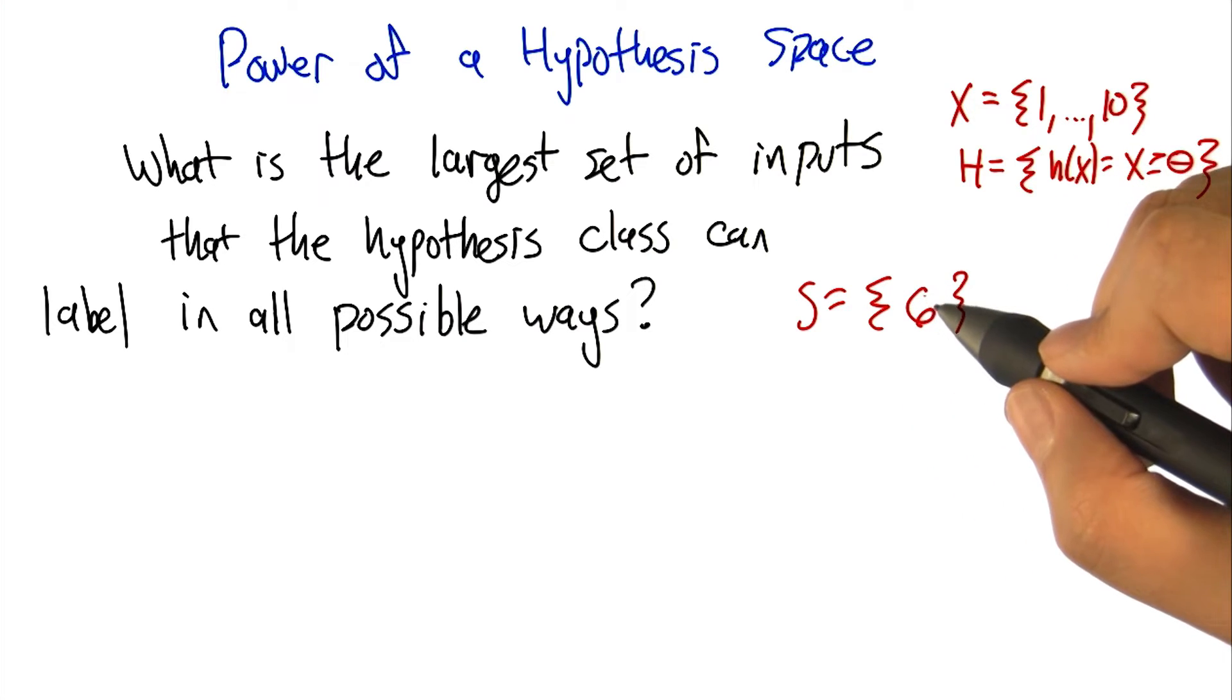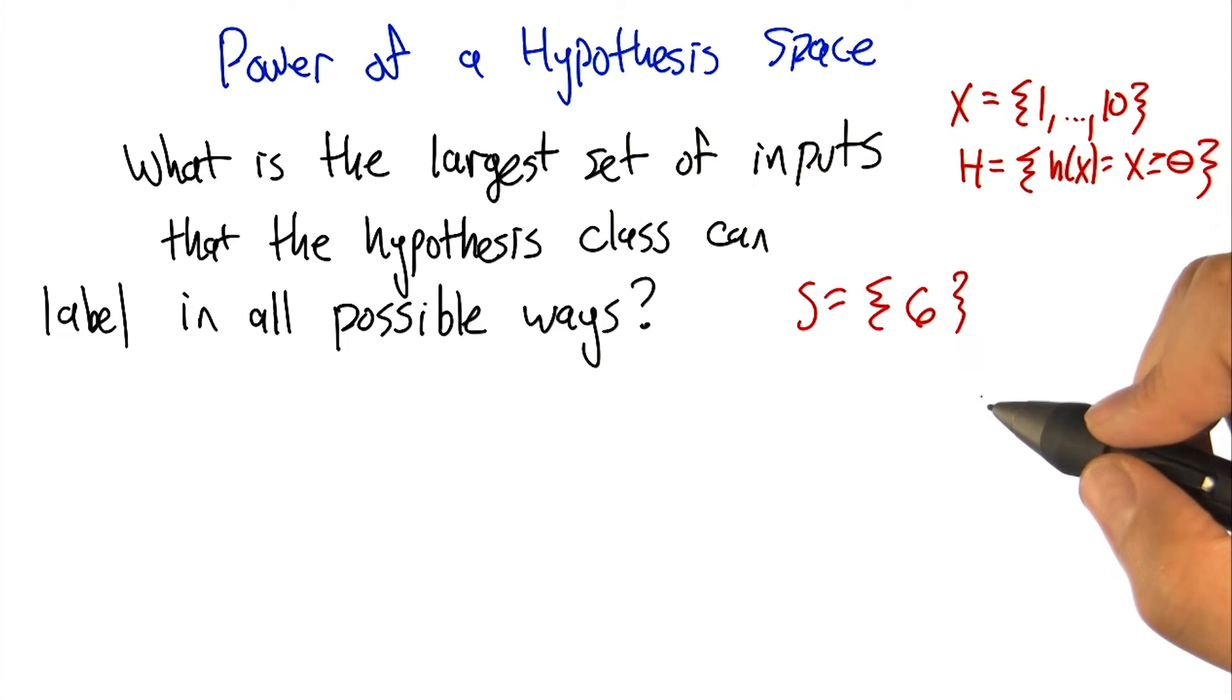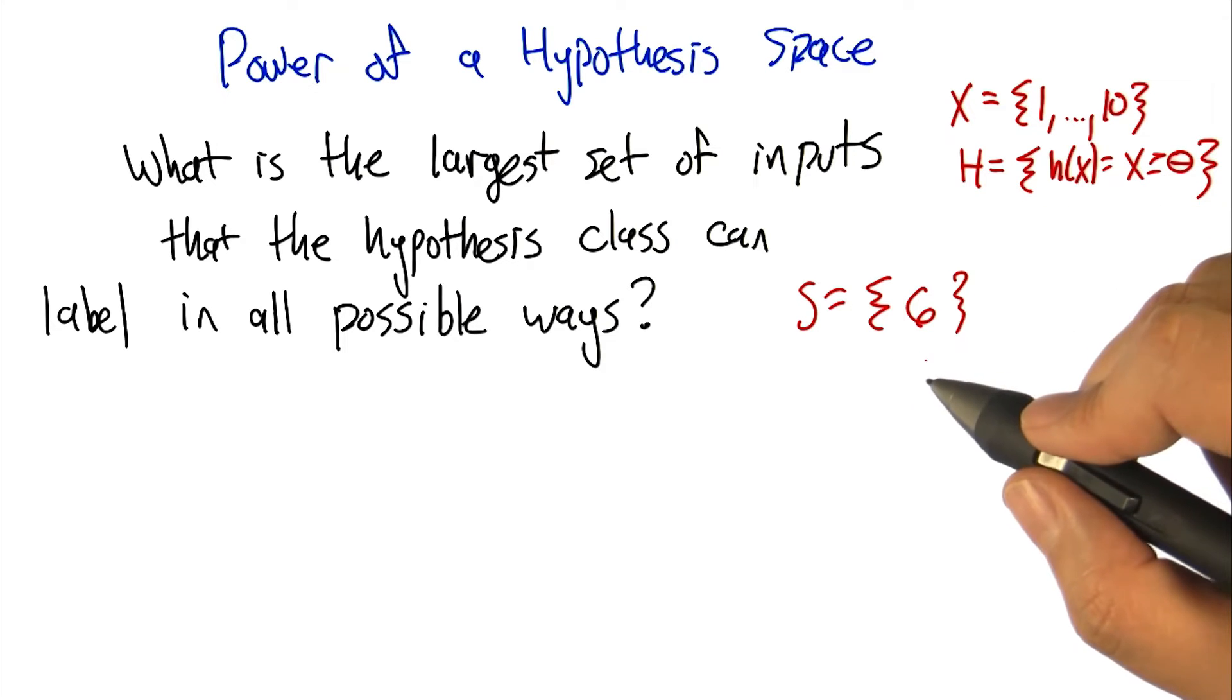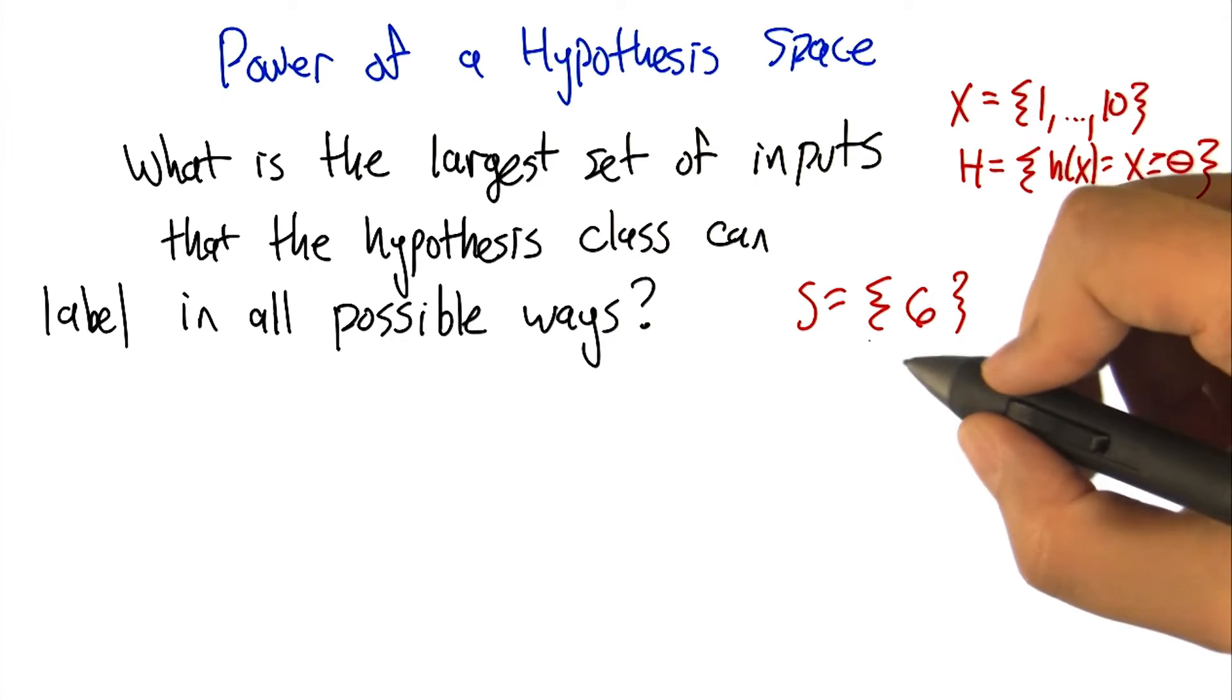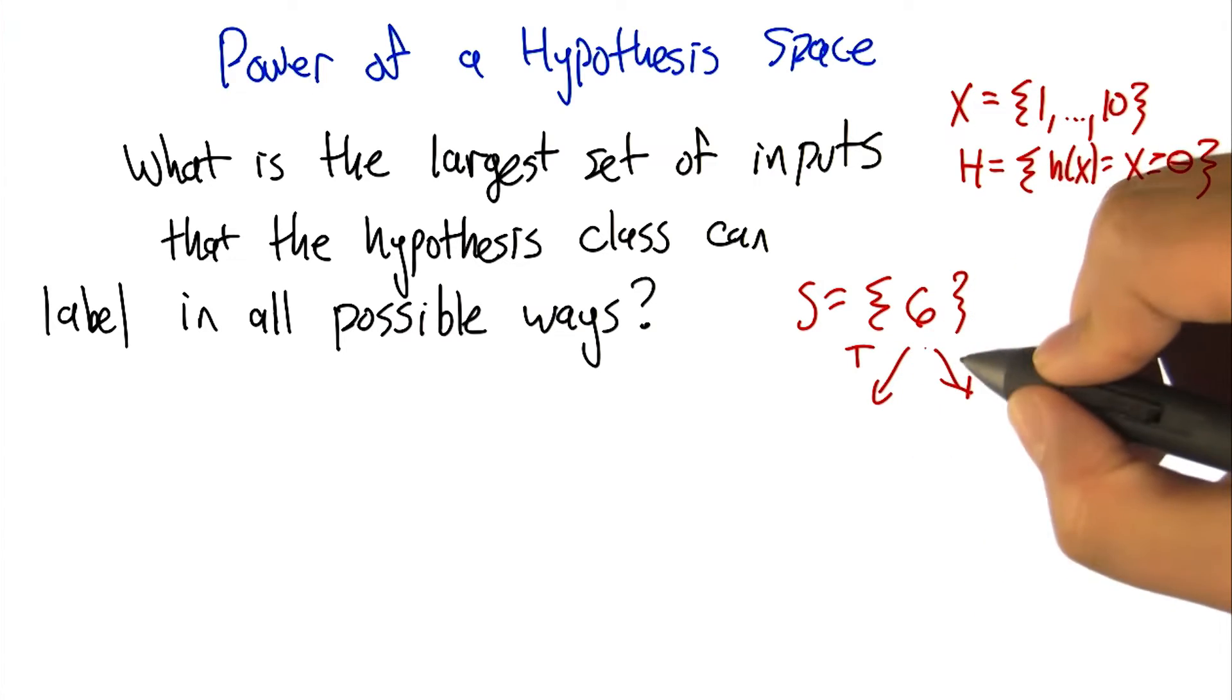If S is a set of points, a set of inputs—in this case just six—it's one of the inputs from the set. Are there hypotheses in the hypothesis class that can label this in all possible ways? Well, there's only two possible ways: it can label it as true or false.